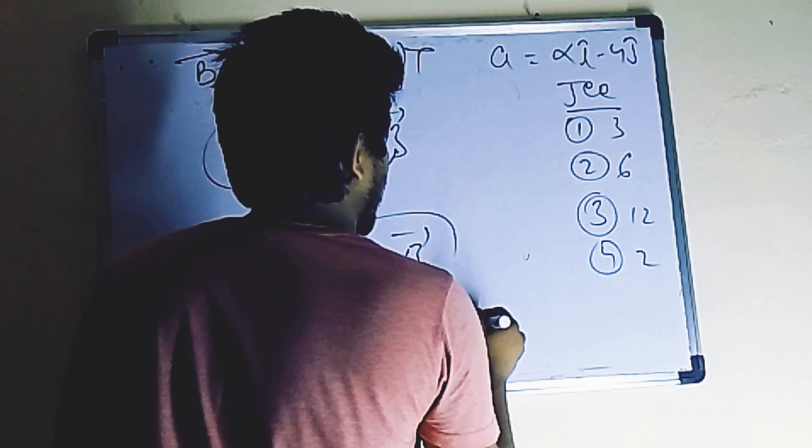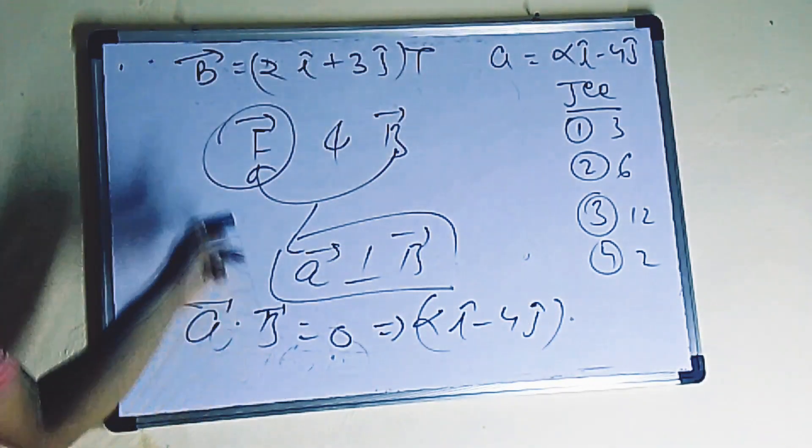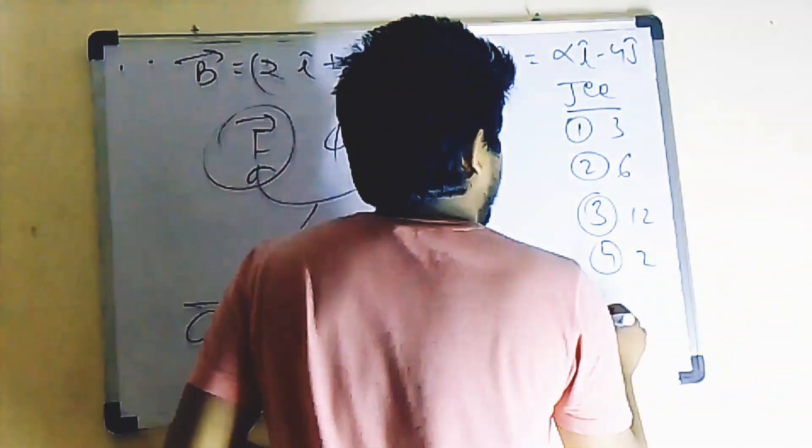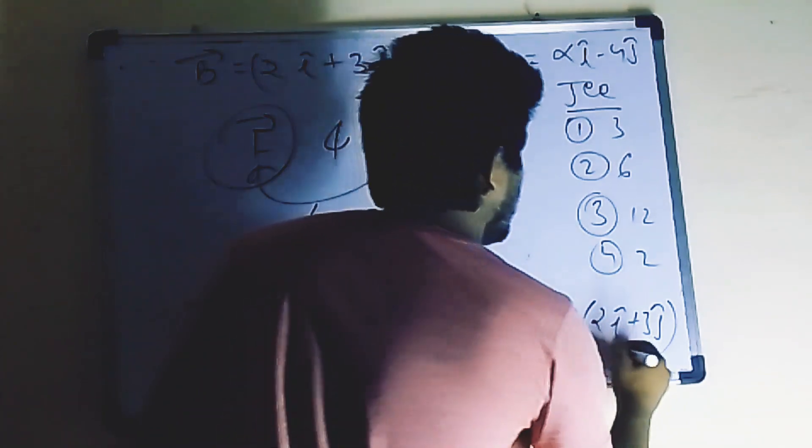Alpha i cap minus 4j cap, dot, what is B? 2i cap plus 3j cap equals to zero.